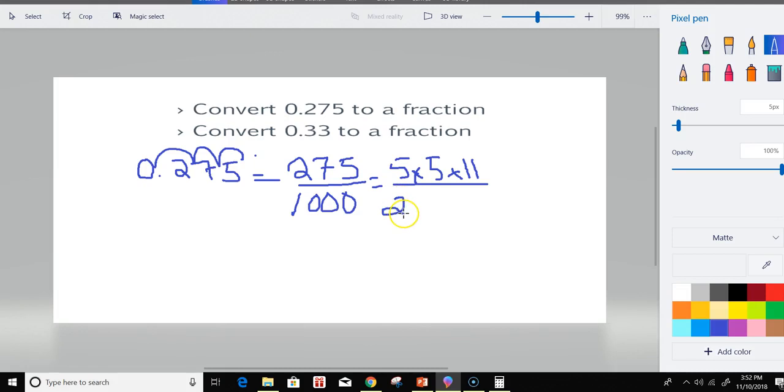And then a thousand has a lot of factors, of course. 2 times 2 times 2 times 5 times 5 times 5. If you remember, we could also have 2 to the cube.